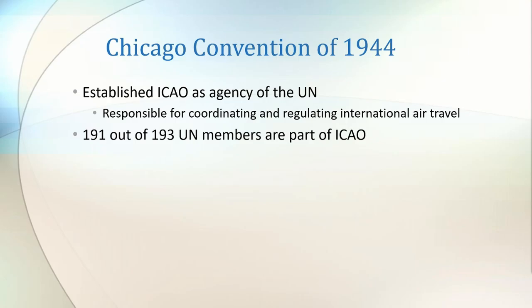As of November 2017, 191 out of the 193 members of the UN are members of ICAO, with the exception being Dominica and Liechtenstein. It took three years for the first version of the Chicago Convention to come into force, and during this time the International Commission for Air Navigation, which we mentioned earlier, was disbanded. Revisions are periodically made and published to the Chicago Convention, with the last revision being in 2006.